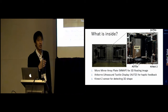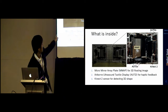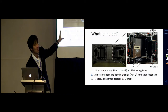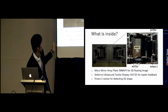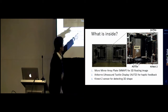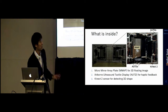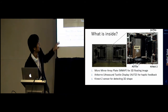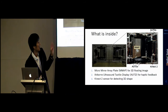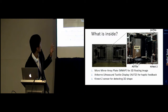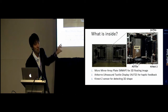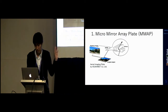I will talk about what is inside this Haptoclon system. We have three key technologies to make this system. One is the micromirror array plate, which makes the floating 3D image. The second one is the airborne ultrasound tactile display, set around the workspace to make the haptic feedback in the air. The third one is the Kinect sensor, which detects the depth map inside the workspace.